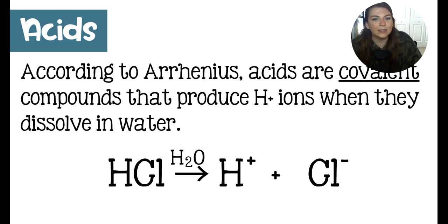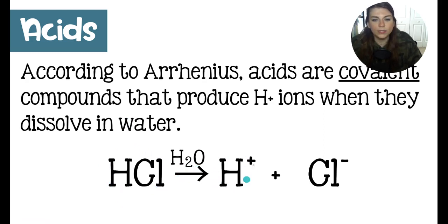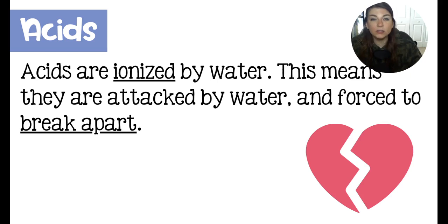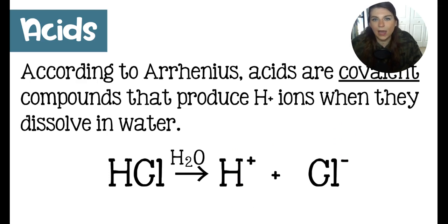Now acids are a little bit more interesting because they are covalent compounds, and Arrhenius realized that. But they are covalent compounds that will actually break apart into ions, which is a little interesting. That's kind of what makes them different from regular covalent compounds. They are going to produce hydrogen ions when they dissolve in water. If we have our classic hydrochloric acid dissolving in water, we get a positive hydrogen ion and a negative chlorine ion. This positive hydrogen ion is what makes the hydrochloric acid an acid. The process here is a little bit different because acids are ionized by water. What really happens is they are attacked by water, and they're forced to break apart.